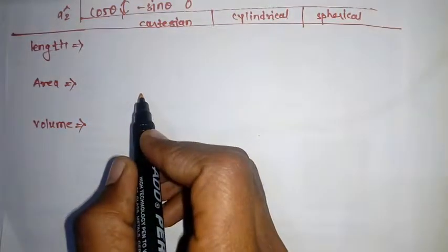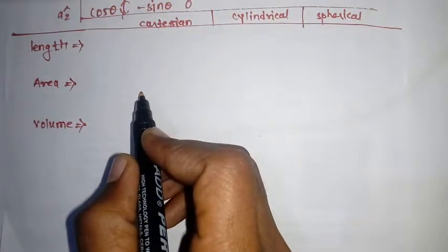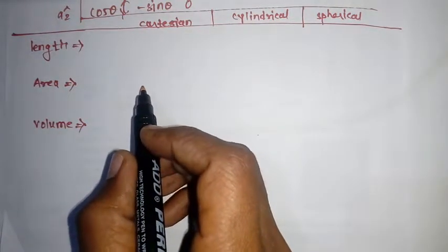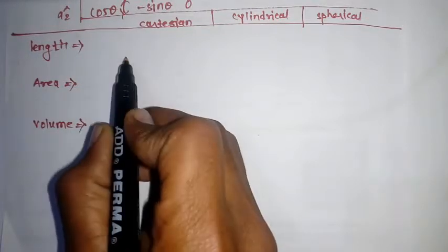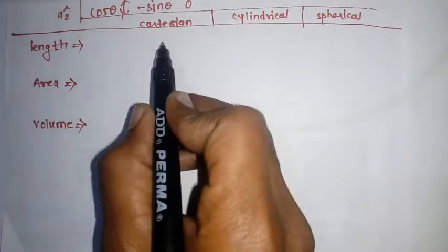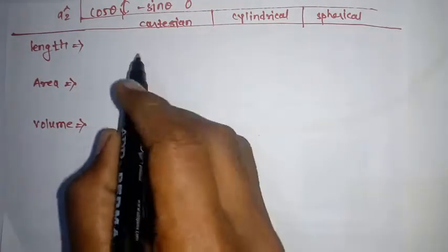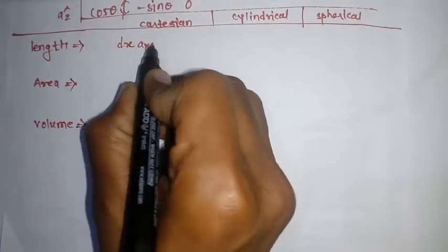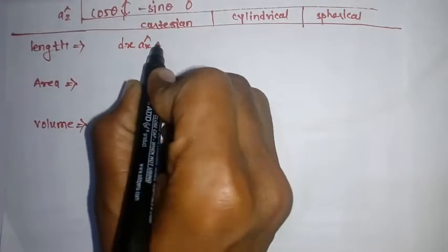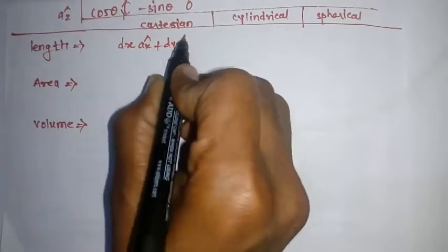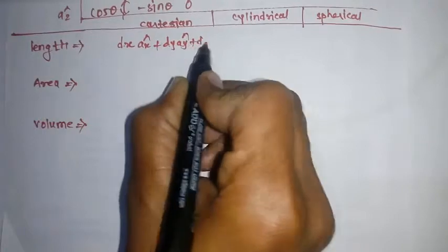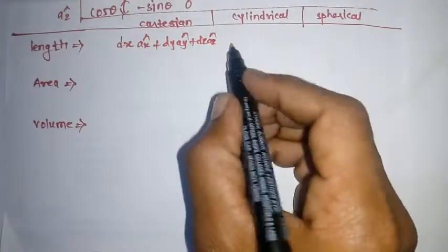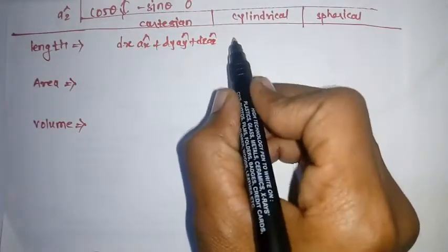In this lecture we are going to cover the length element. In Cartesian, the length element dL is written as: dx a_x cap plus dy a_y cap plus dz a_z cap.